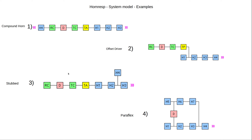Here are some examples of system models available in HornRasp. The first one is the compound horn — we can see it is a compound because we have two sound outputs, and those blocks are connected in series. The second example is the offset drive horn, where some blocks are connected in series with the driver and then the signal is sent in between two horn segments, H1 and H2. There is also the tuba horn, the paraflex horn, and others.